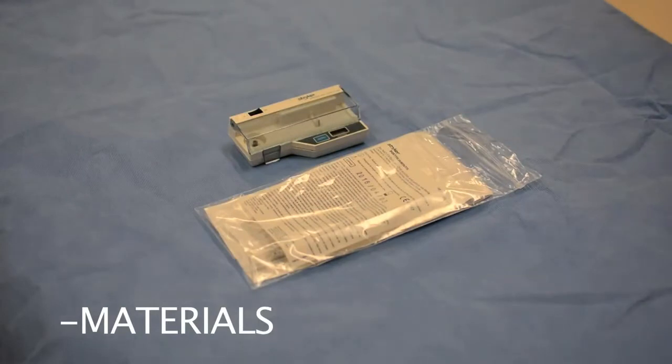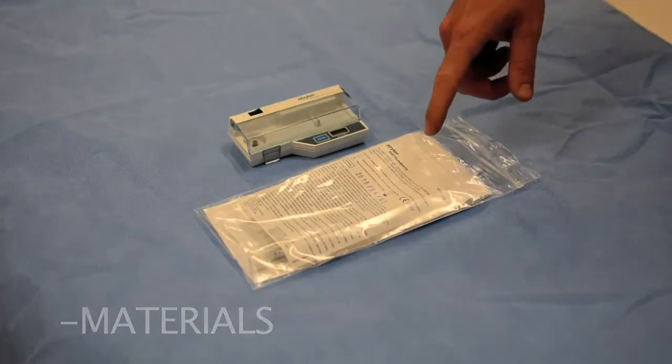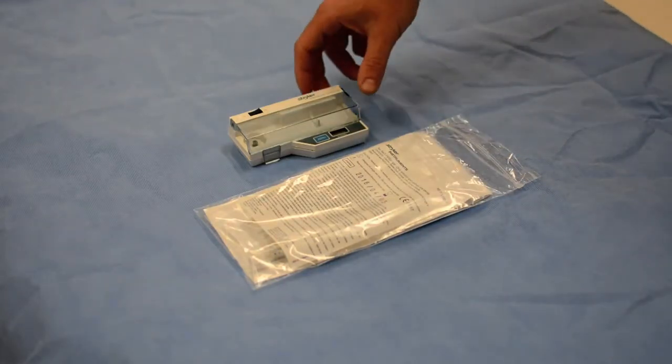Step 1 is to obtain the disposable components for the Striker monitoring system, which include the saline syringe, the pressure coupler, and the pressure housing.